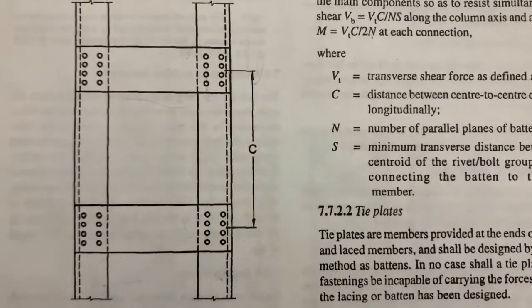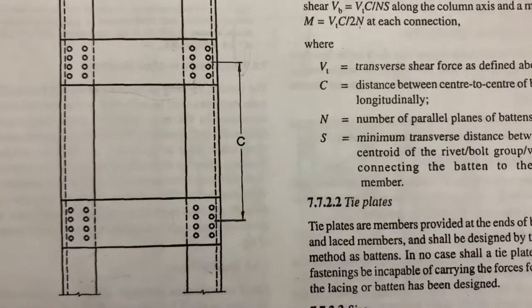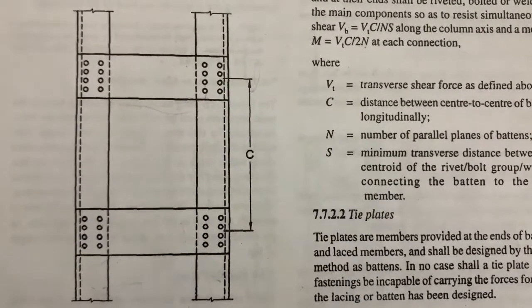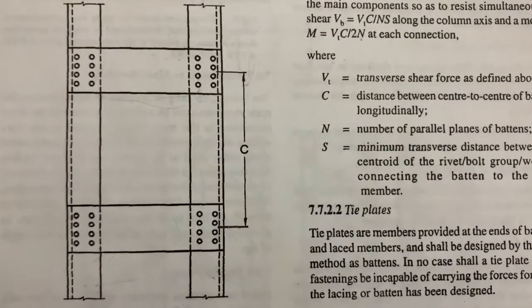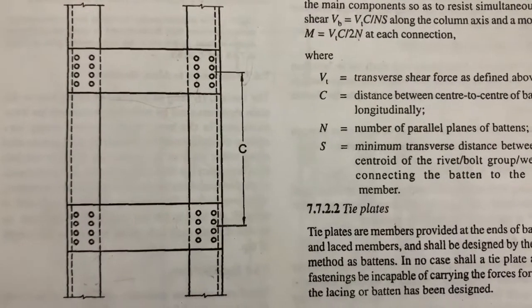We can design these lacings and battens. Usually we can see these type of members in railway stations because most of the railway stations are steel structures. There we can see them.